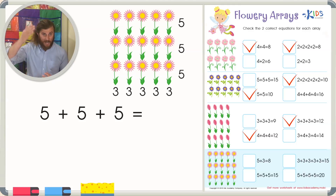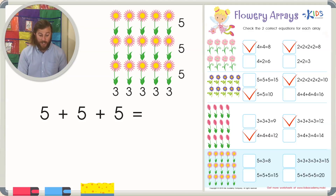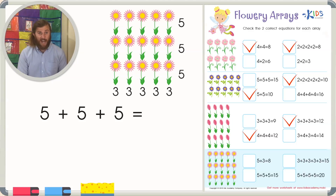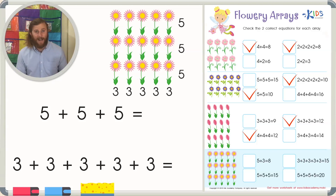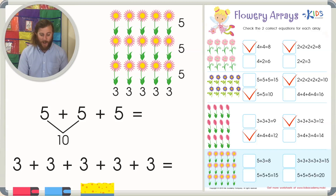Our second equation can be found by looking at the columns. There are one, two, three flowers in each column. How many columns are there? There are one, two, three, four, five columns, so we're going to add three five times: three plus three plus three plus three plus three. Five plus five equals ten, plus another five gives us fifteen, which means our other equation must also equal fifteen.